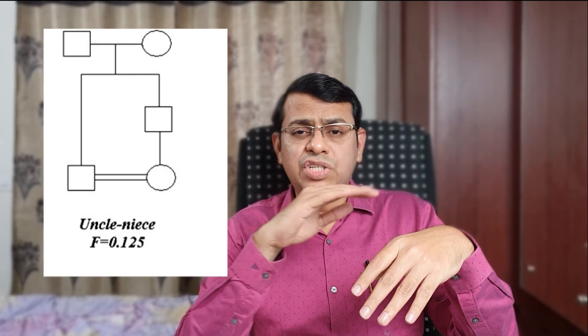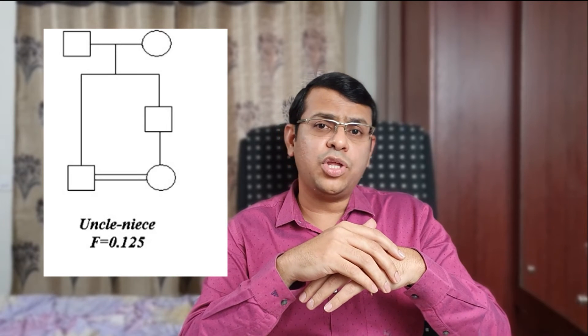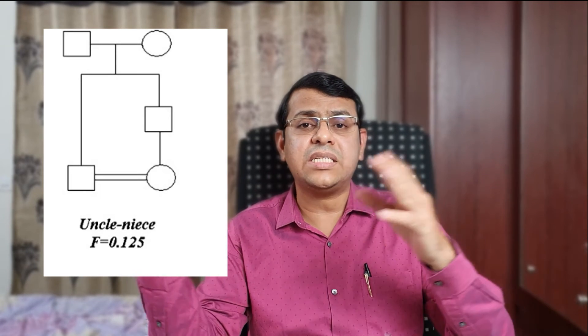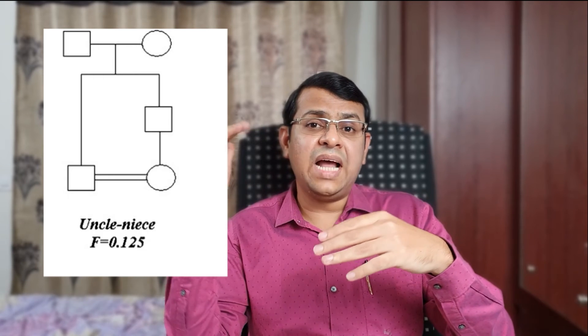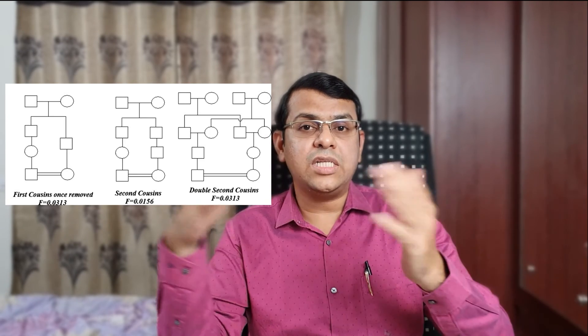A similar, almost the same, risk is associated with the common prevalent practice in South India, which is an uncle-niece union. This again has the highest risk of inbreeding. The next level of risk is followed by first cousins, first cousins once removed, and second cousins and so on. Beyond second cousins, probably the risk associated with consanguineous marriage is not that much, but if you marry within that community, the level of inbreeding may still be slightly higher than the rest.